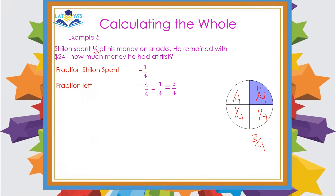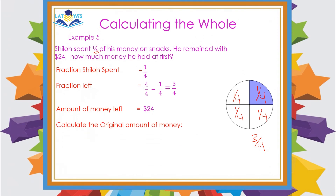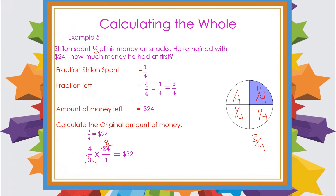Why is it important to determine the fraction he has left? Because they told us he remained with $24. We equate the fraction he has left to the money he has left to find the original amount. So we find the reciprocal of 3 quarters — that's 4 over 3 — and multiply by 24. We look for opportunities to reduce: 3 into 3 is 1, and 3 into 24 is 8. Then 4 times 8 gives us 32. So $32 represents the amount of money Shiloh had at first.